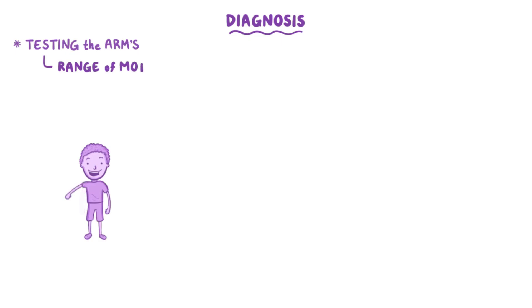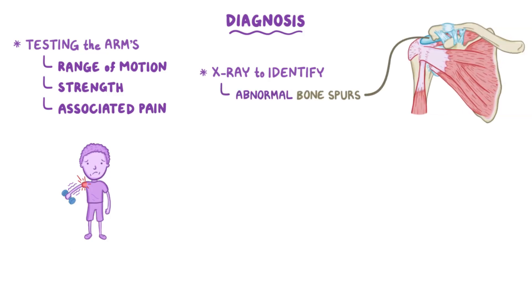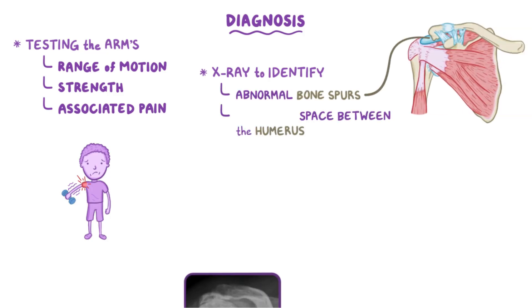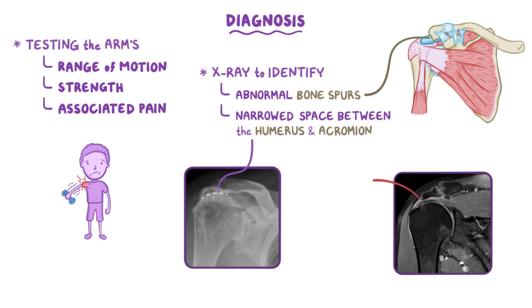The diagnosis of a rotator cuff tear mainly relies on testing the arm's range of motion and strength, and any associated pain. An x-ray may identify the presence of abnormal bone spurs on the acromion, or if the space between the head of the humerus and the acromion is narrowed. An MRI can visualize the torn tendon and identify if it's a partial or complete tear.